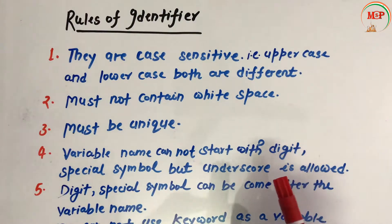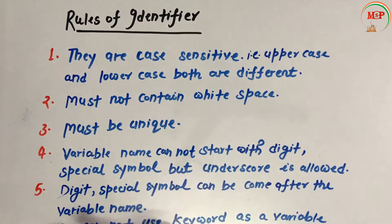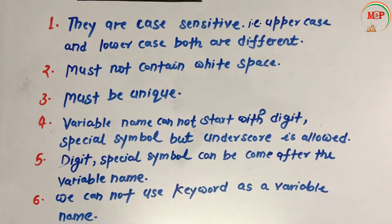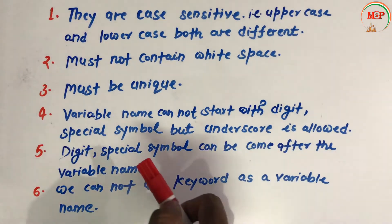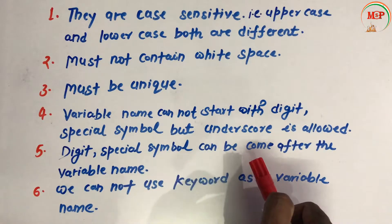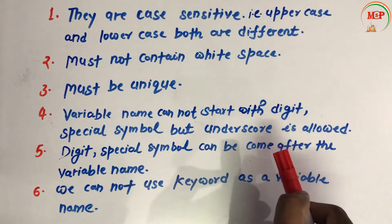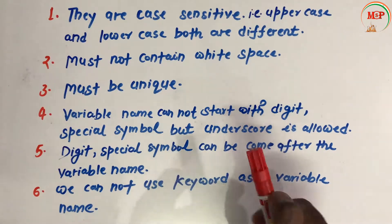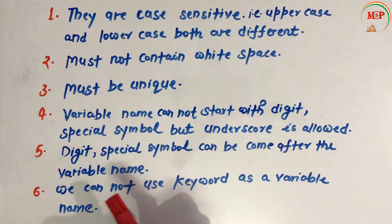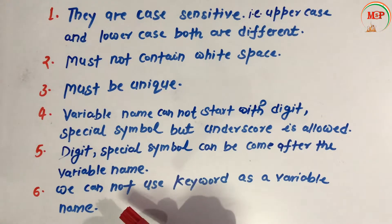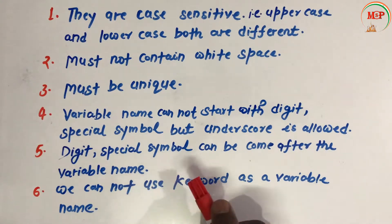The fifth rule is that digits and special symbols can appear after the first character of the variable name. The sixth rule is that we cannot use a keyword as a variable name. There are a total of 32 keywords in C, and since they are reserved words with fixed meanings, using them as variable names will cause an error.